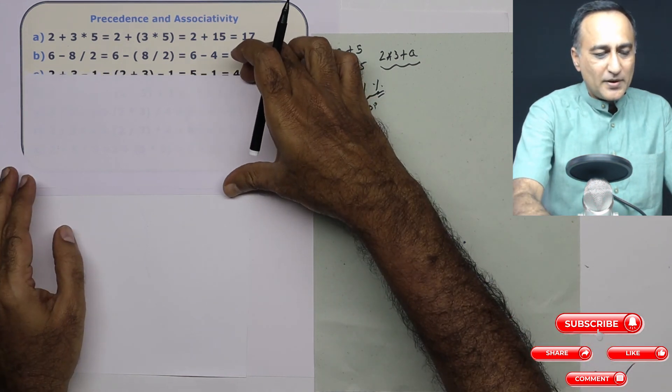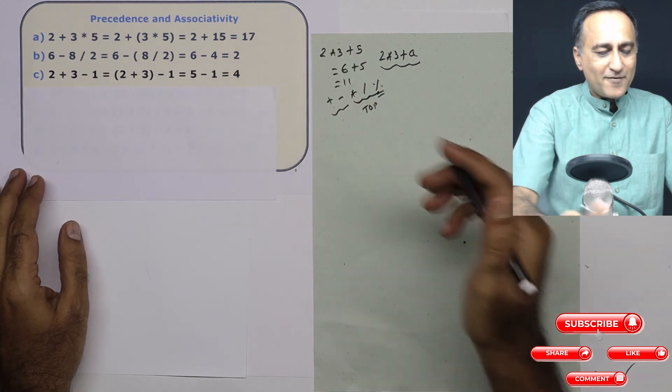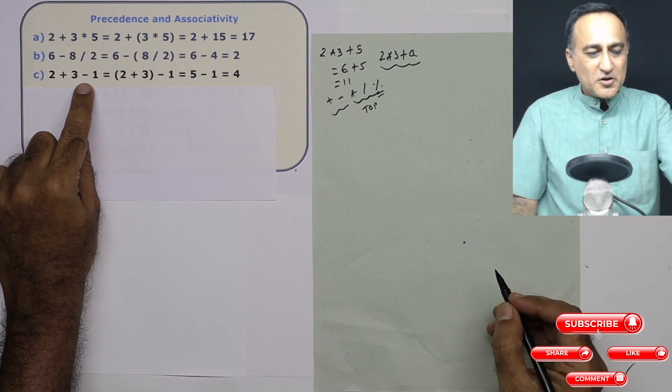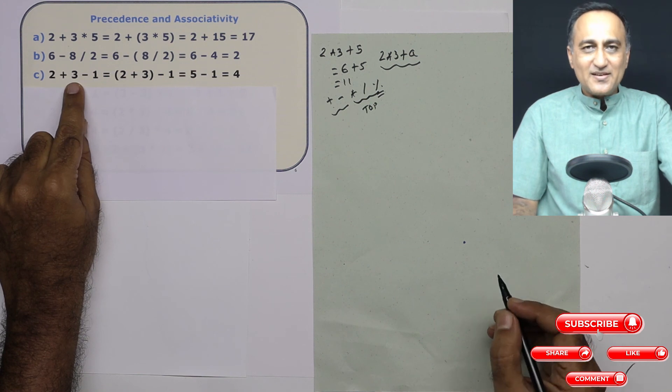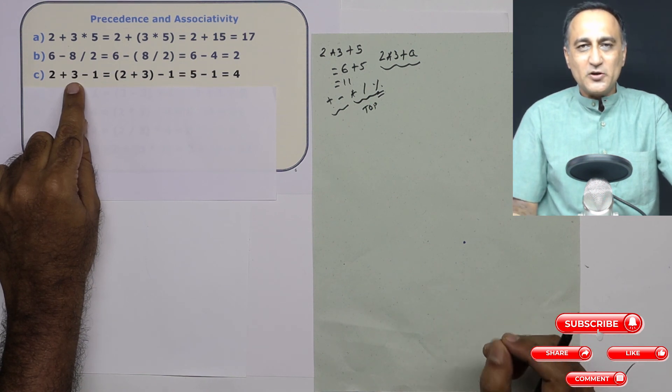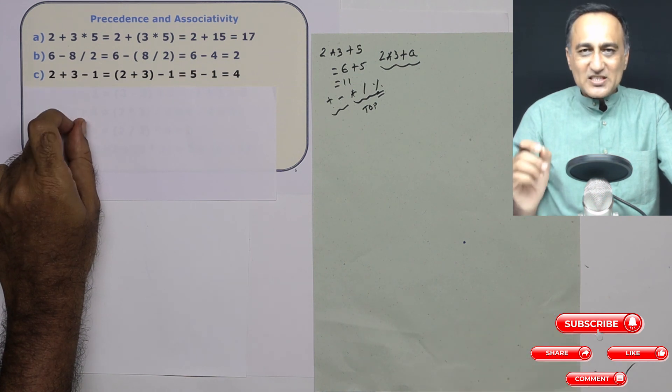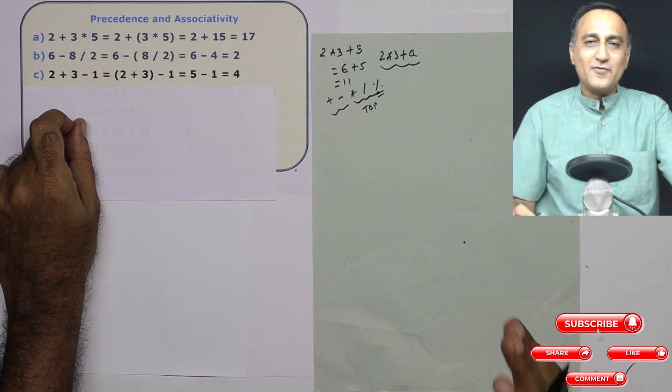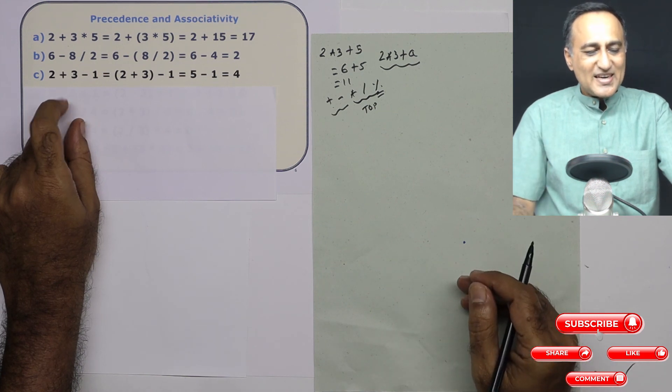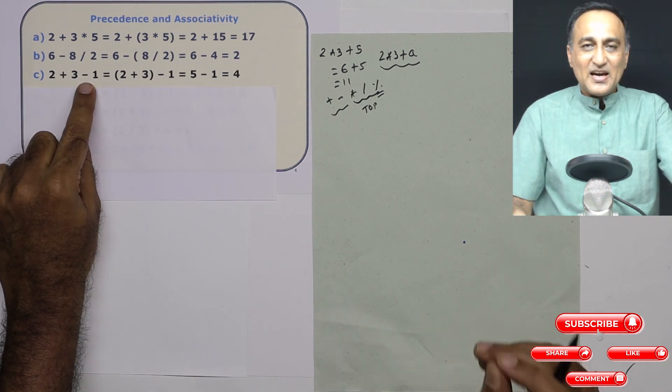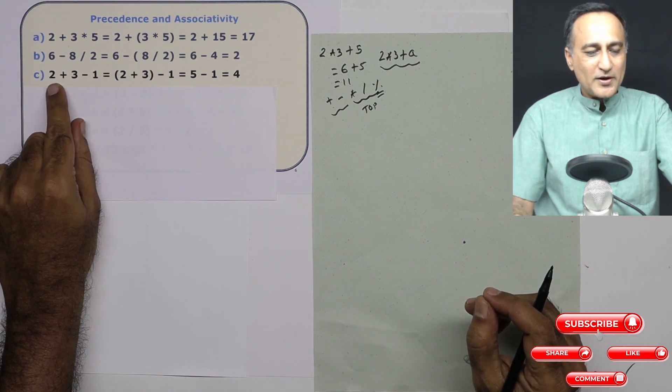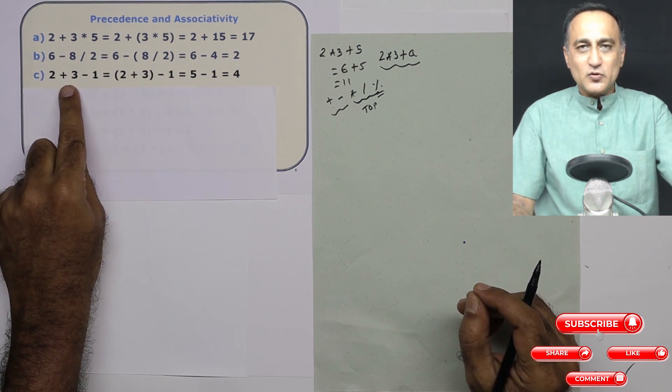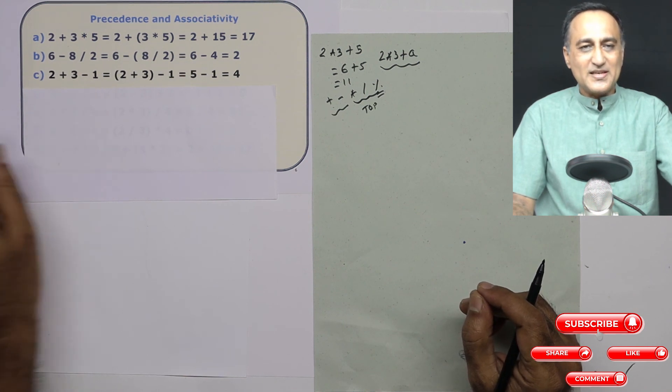But now suppose if you take a look at the next expression, you have two operators, plus and minus, which have the same precedence. Now, which should I do first? Should I do 3 minus 1 first or 2 plus 3 first? Here, a principle called associativity comes into picture. If there exists operators with the same precedence, then it tells you how to evaluate the expression, whether from left to right or from right to left. In this case, since plus and minus have the same precedence, associativity tells me go from left to right. So I do first 2 plus 3 which is 5 and then 5 minus 1 is 4. So this is how the principle of associativity was used to resolve the conflict between plus and minus.